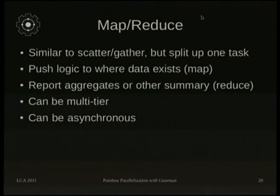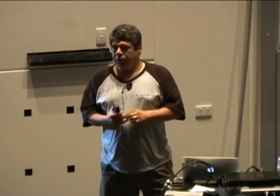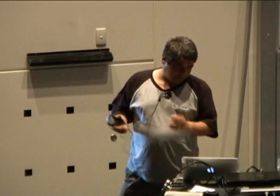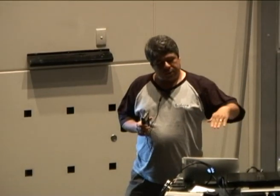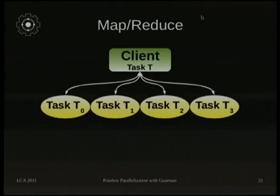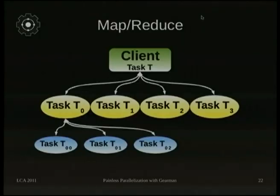Map reduce is one I use a lot, especially when you have a large number of records to process. You break them up and say worker X, process records one through N; worker Y, process N+1 through M, and so on. This can also be multi-tier and asynchronous — though you can do it synchronously too. The client takes a task, breaks it into pieces, hands them off to workers, and a worker can then further break that task up and give it to other workers.